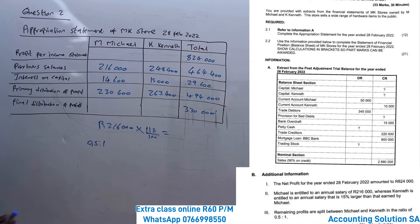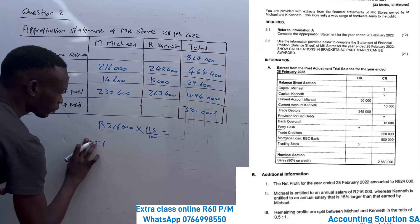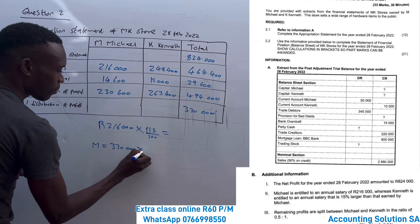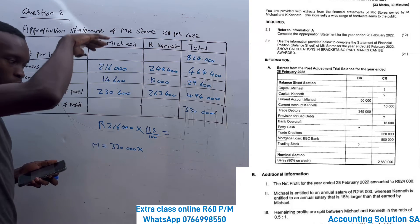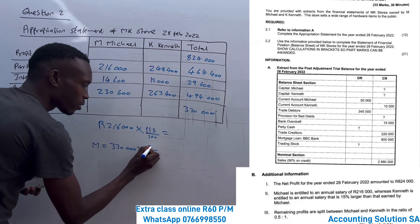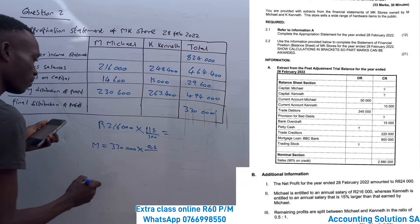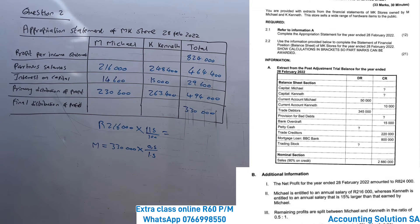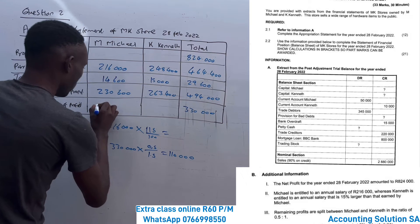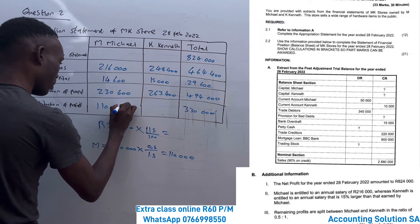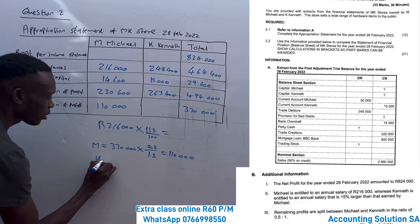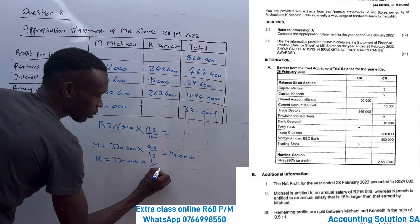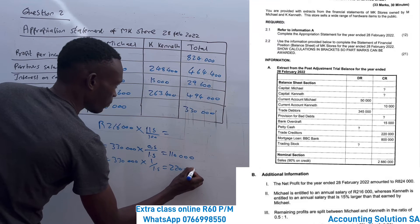To allocate R330,000 using the ratio: for Mitchell you calculate 0.5 over 1.5 multiplied by R330,000, which gives R110,000. For Kenneth you calculate 1 over 1.5 multiplied by R330,000, which gives R220,000. The total 0.5 plus 1 equals 1.5, which is your denominator. Very simple.